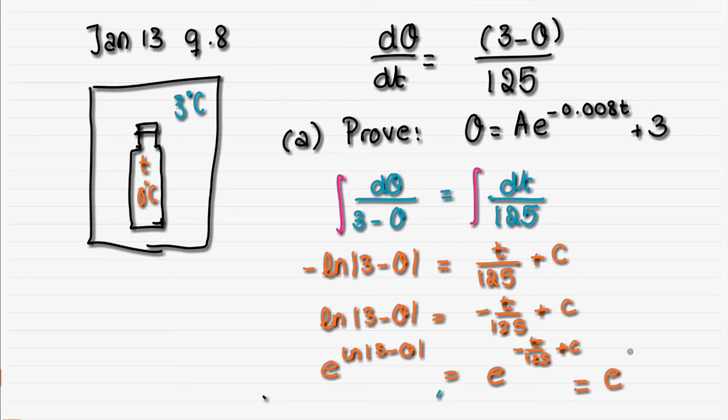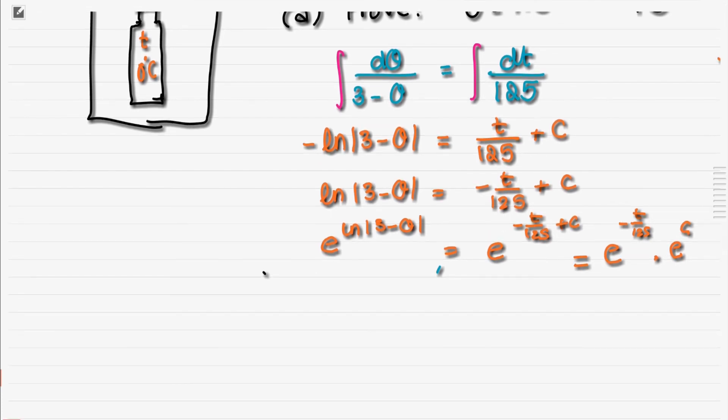And this will be e^(-t/125 + c), which is also, by the way, e^(-t/125)·e^c, because when you multiply two with the same base, you add the exponents.